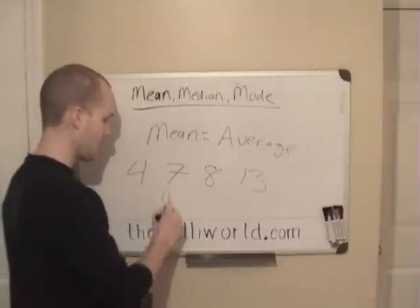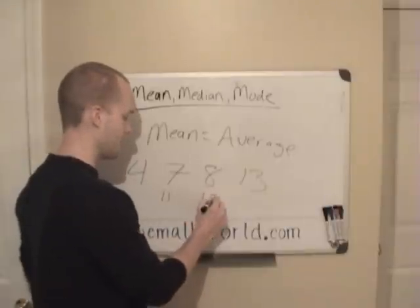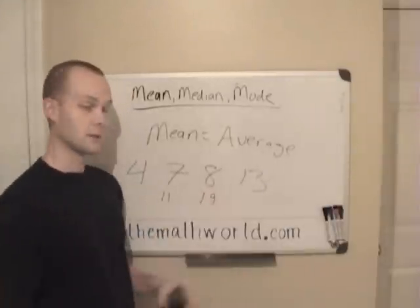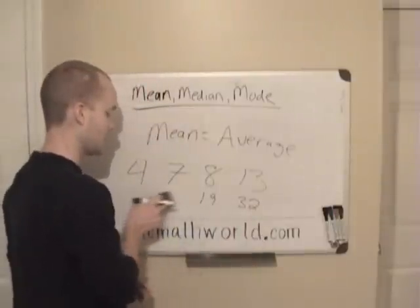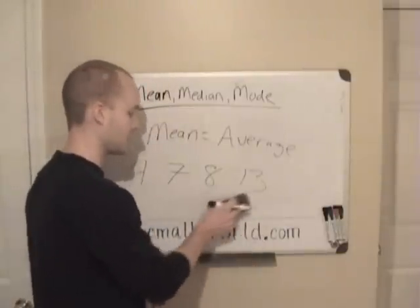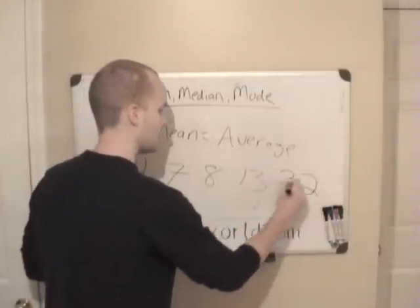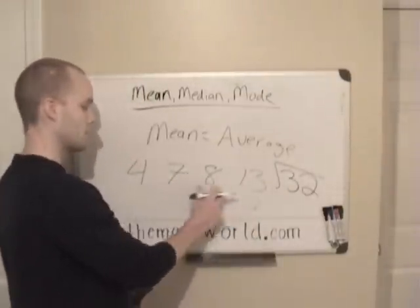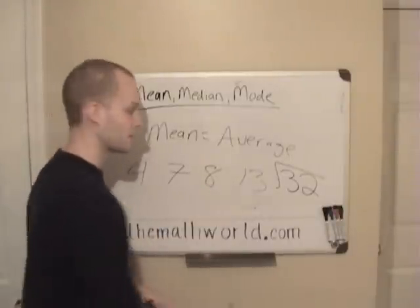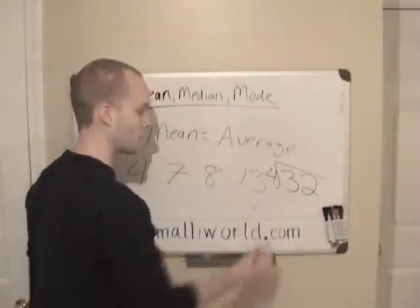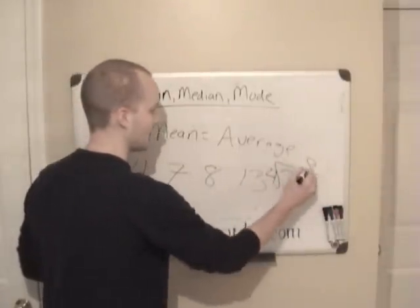4 plus 7 is 11, plus 8 is 19, plus 13 is 32. So the next thing we need to do is take 32 and divide by the total amount of numbers that we have. In this case we have 4 numbers. We're going to take 32 divided by 4.